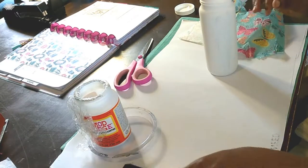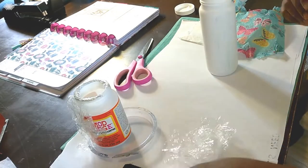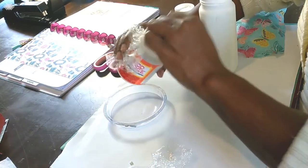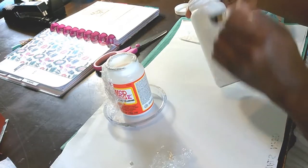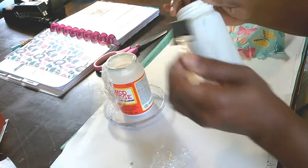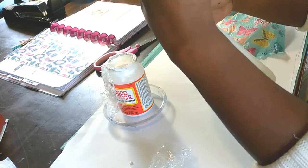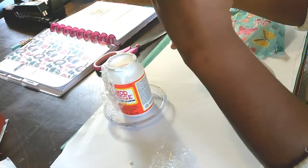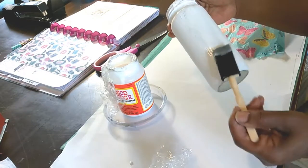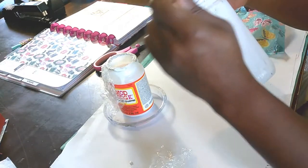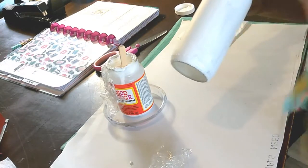Alright, so with saran wrap in hand or cling wrap, I got this from the Dollar Tree, it doesn't have to be something expensive, just whatever you can pull out of your pantry. I'm just going to do this in sections that I can manage. I'm going to get a nice coat of the Mod Podge right here, all the way up to the top. And the smaller the sections, the easier it is for you to lay it and reposition it if need be.